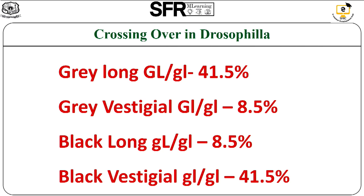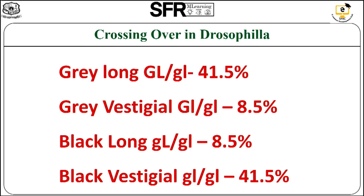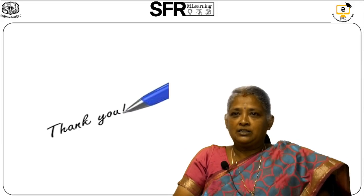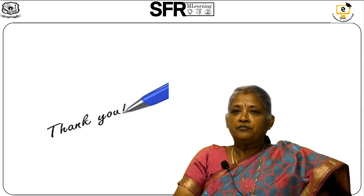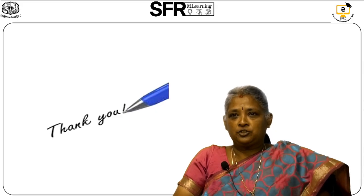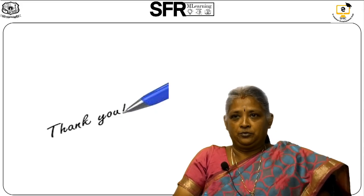This is the phenomenon which occurs due to crossing over — the recombination of genes — which is a specialized event occurring only during meiosis I. Thank you everyone for watching this video; we shall see the next topic in the next video.